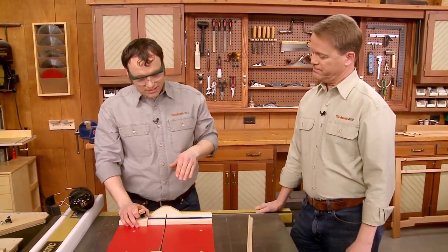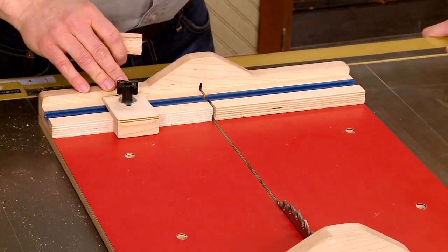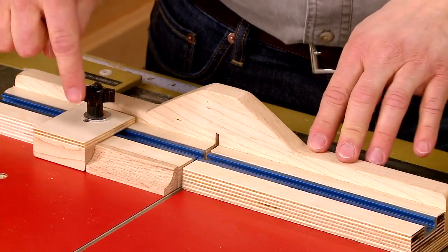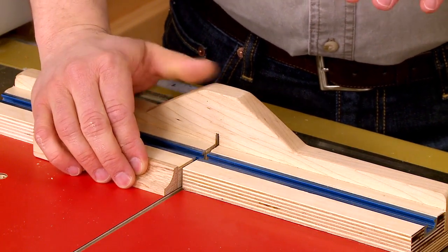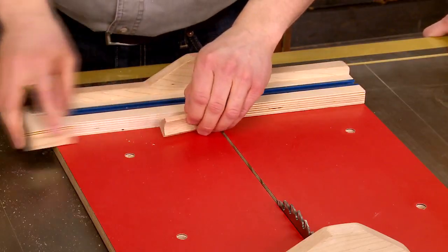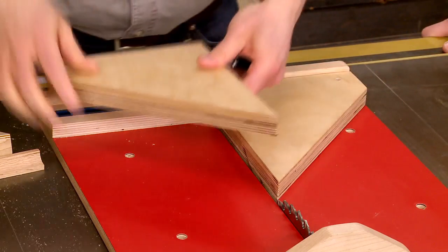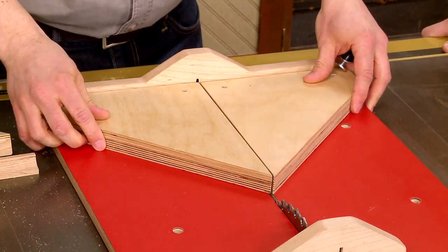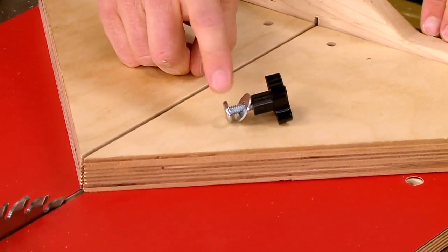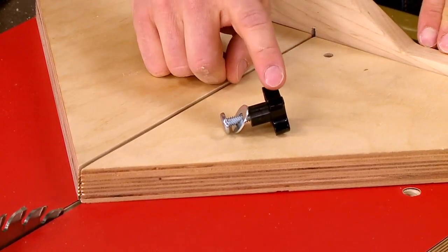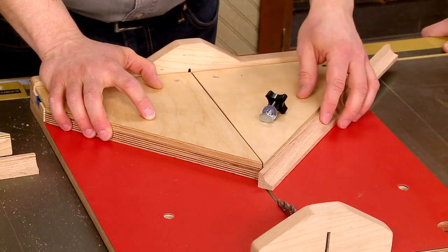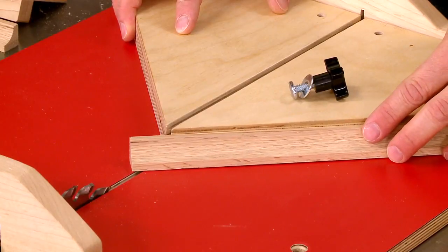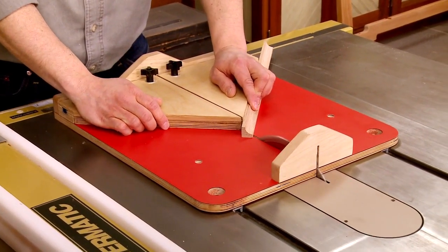But what sets this crosscut sled apart from other ones is this T-track that's set in near the back fence. And with it, I can attach a stop block for making accurate crosscuts in a lot of pieces so they're all the same length. But there's more to it than that. It's actually the heart of a modular system so that you can make a wide variety of cuts. For example, I can attach these miter fences in place. Everything gets attached with a flange bolt, a washer, and a knob so it's nice and secure. Now, with these miter fences attached, I can cut accurate miters on the end of this molding piece. It's just a matter of holding it in place against the fence and moving it through the blade to make an accurate cut.